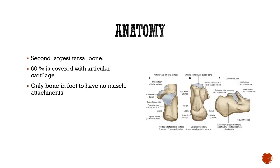The talus is the second largest tarsal bone; the largest is the calcaneus. Sixty percent of the talus is covered by articular cartilage — compare this to the scaphoid, which was covered 70 percent. One very peculiar point about the talus is that it has zero muscle attachments; it gives attachment to ligaments but no attachment to muscles.